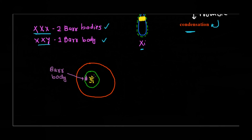Briefly about the Barr body: if you've observed it under the microscope, it is always found towards the nuclear envelope — very close to the edge of the nucleus. The reason is that chromosome distribution in the nucleus is not random but a very specific process. Chromosomes that are transcriptionally inactive are found near the nuclear envelope, whereas transcriptionally active chromosomes are found towards the center of the nucleus. The center is the highly active transcription area, while the region near the nuclear envelope has very low transcription levels — so the inactive Barr body is located at the nuclear envelope.